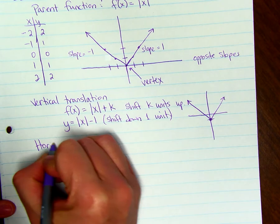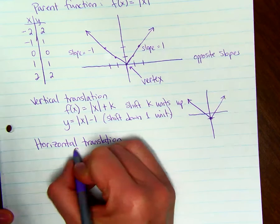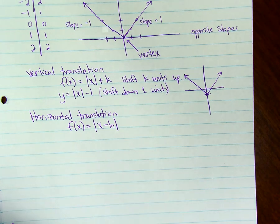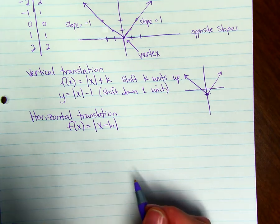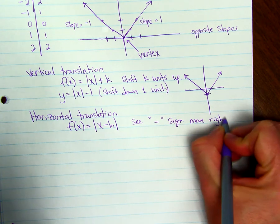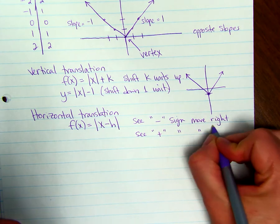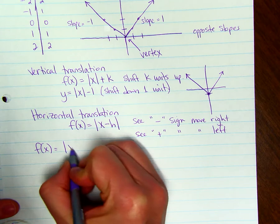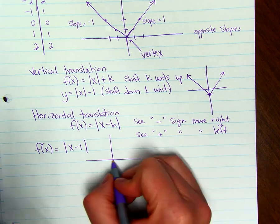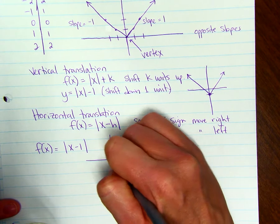A horizontal translation moves the entire function right or left. It looks like this: f of x equals the absolute value of x minus h. If you see a minus sign, it's going to move to the right, because h will be positive and we're subtracting it. For example, f of x equals the absolute value of x minus 1 — we see a minus sign, so we move to the right. Our original vertex at 0, 0 moves over to 1, 0, and then we regraph our parent function.